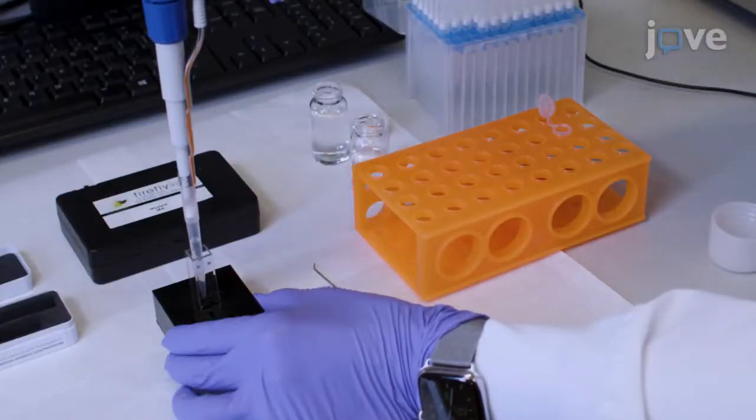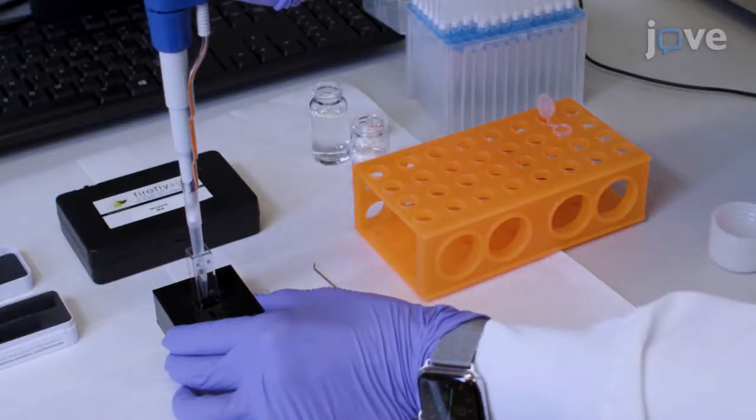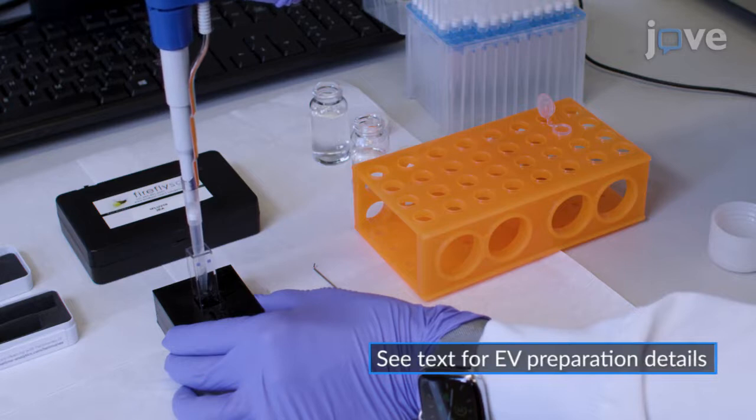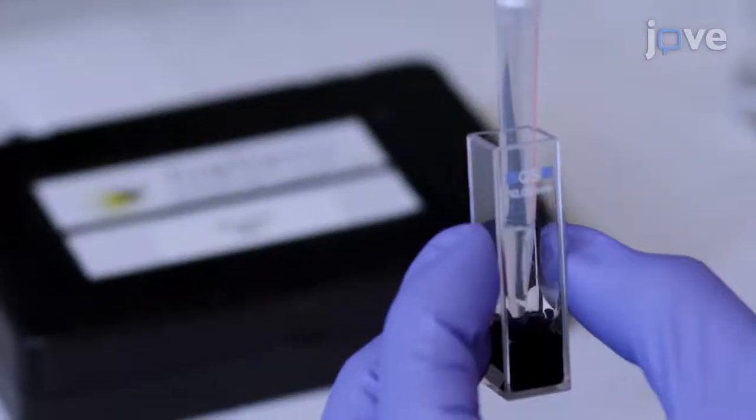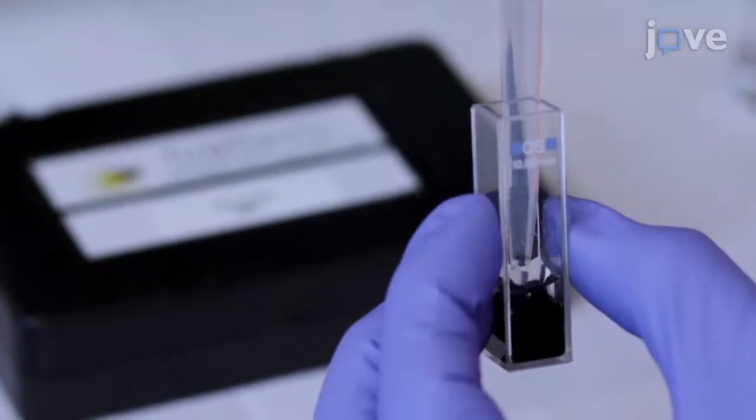Use a pipette to slowly add 400 to 500 microliters of purified extracellular vesicles onto the cuvette through the hole in the insert, and mix the sample by gently pipetting without introducing air bubbles.